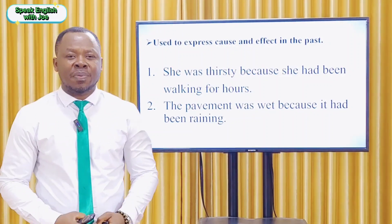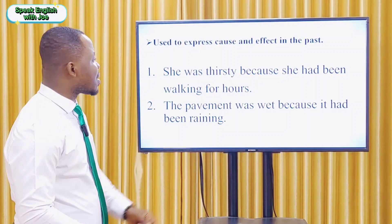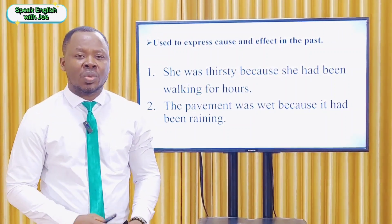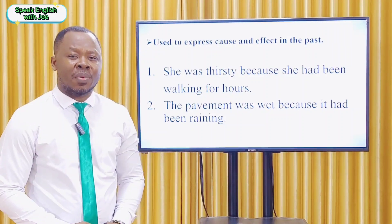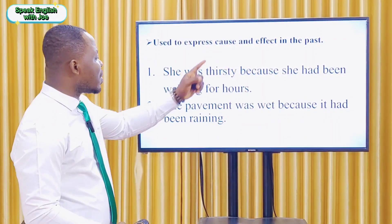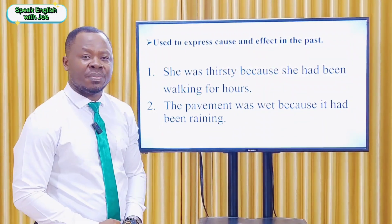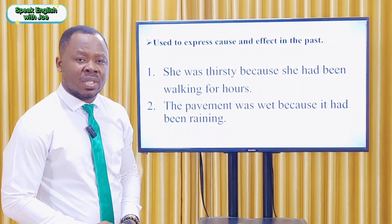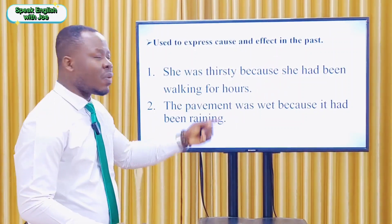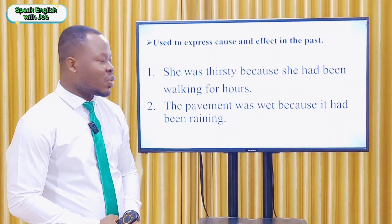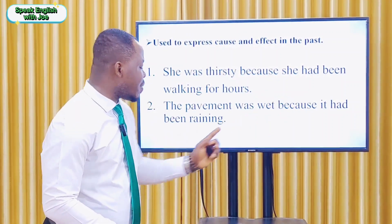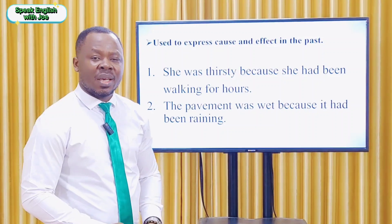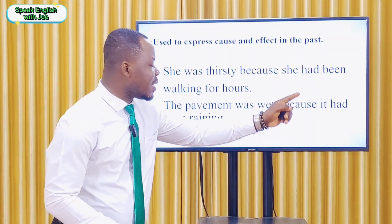The past perfect continuous tense can also be used to express cause and effect in the past. We use 'because' to show the cause and effect. Example one: 'She was thirsty because she had been working for hours.' The effect is 'she was thirsty' and the cause is 'because she had been working for hours.' Example two: 'The pavement was wet because it had been raining.' The effect is 'the pavement was wet' and the cause is 'because it had been raining.'